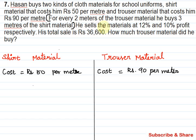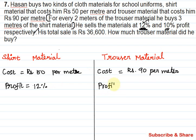He sells the materials at 12% and 10% profit respectively. So the shirt material is sold at 12% profit, and the trouser material is sold at 10% profit. The total sale was 36,600.